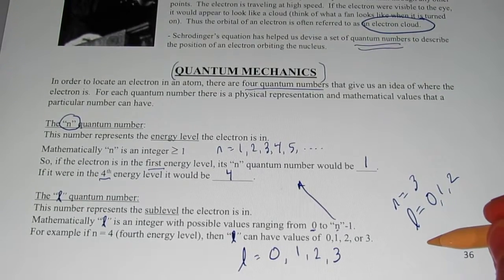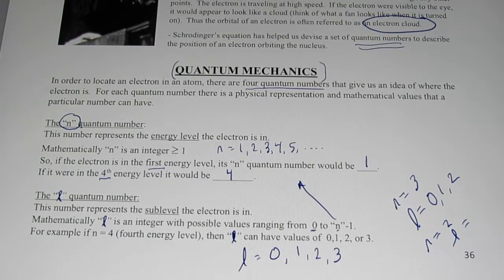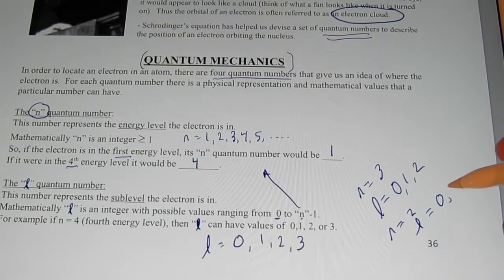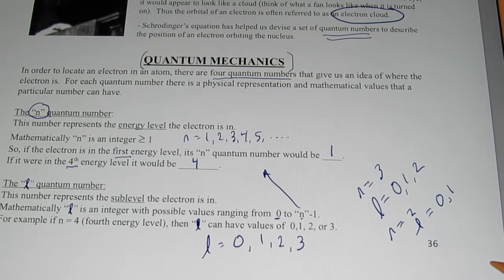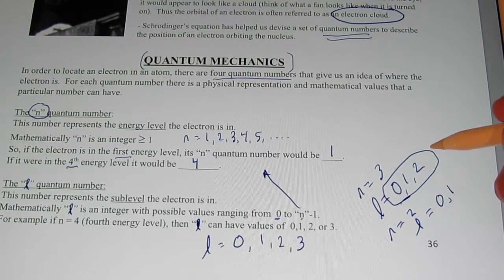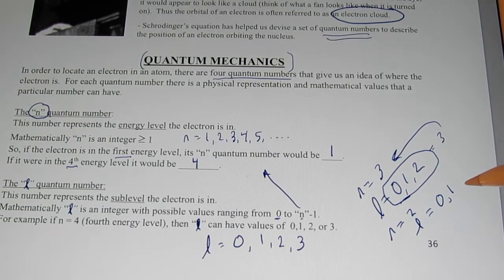What if I am on the second energy level? What values can L have? Good, you're starting with zero. And then you said one. Because n minus one, two minus one is one. Notice that the number of sublevels, in this case, when I have three sublevels, it's equal to the energy level number.